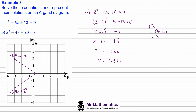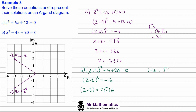For part b, we solve the equation again by completing the square. We get z minus 2 squared, complete the square by taking away 4 and adding back 20, giving z minus 2 squared plus 16 equals zero. Moving the 16 to the right-hand side, z minus 2 equals plus or minus the square root of negative 16, which is root 16 times the square root of negative 1, giving 4i. So z minus 2 equals plus or minus 4i.